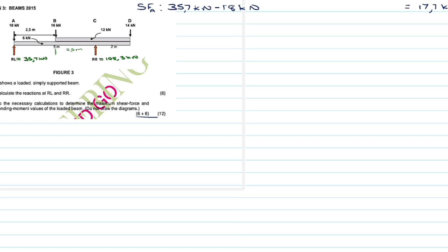Now we account for the shear force between A and B, because we have a beam with a distributed load in that segment. We carry forward 17.7 kN and subtract the beam's distributed weight. The beam load is 6 kN/m multiplied by the length from A to B, which is 2.5 m. So: 17.7 minus (6 × 2.5) = 2.7 kN.